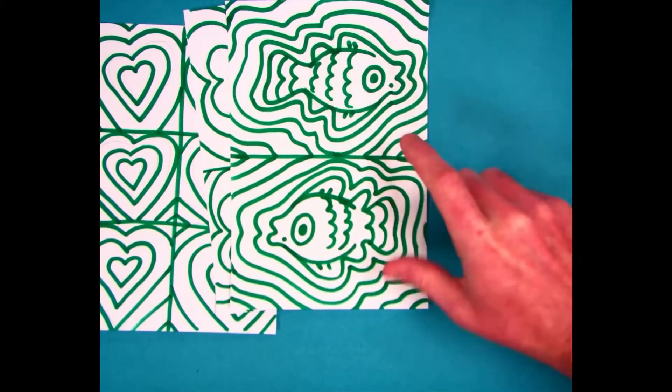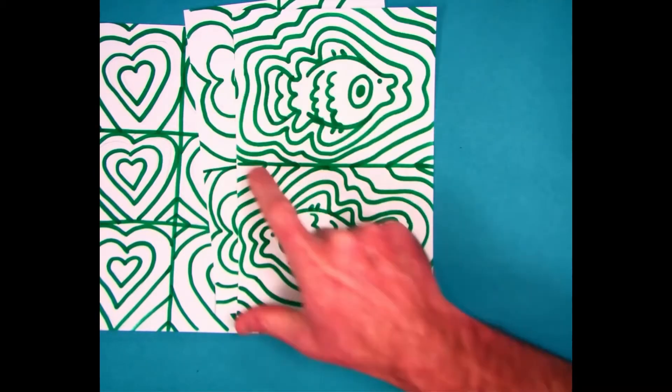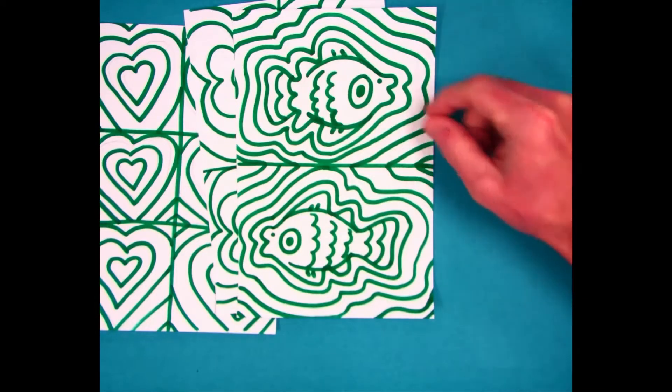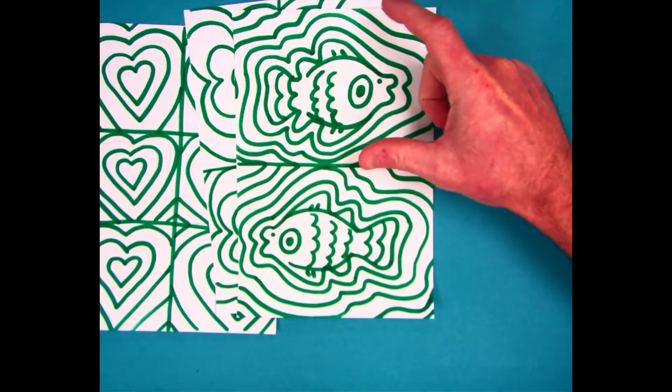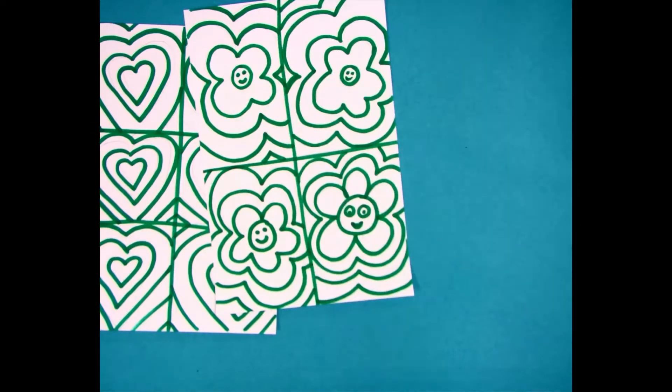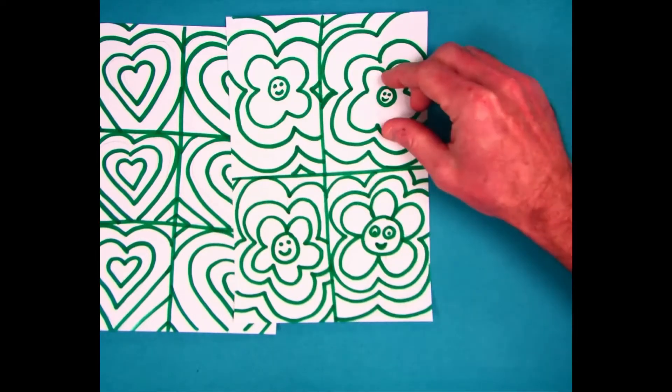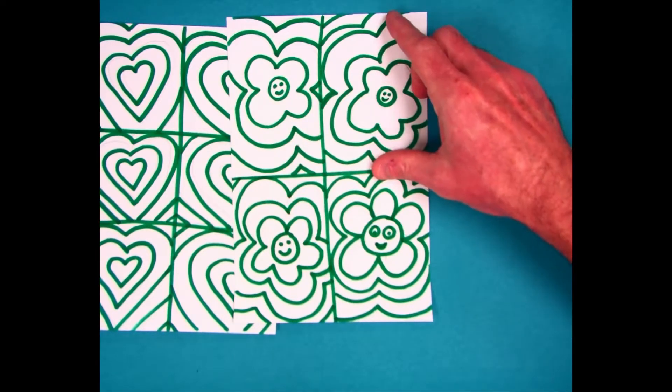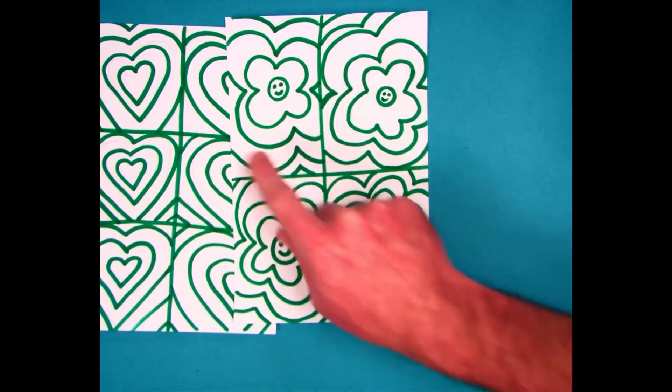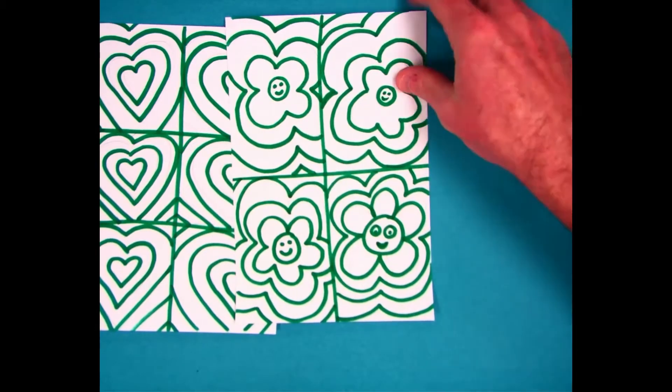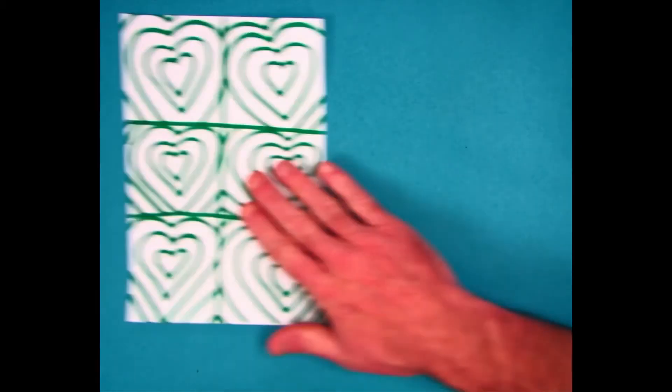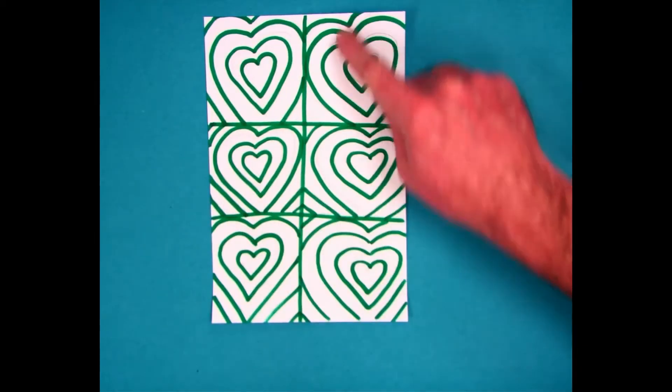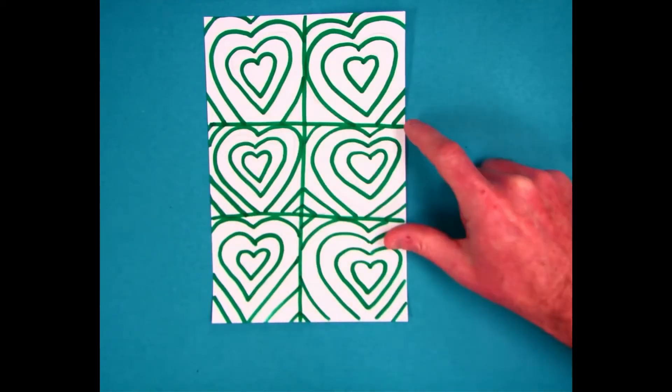You can see on this I divided my paper into two different sections and then I drew something and then rippled lines out from it. On this one I did flowers and rippled the lines out. Instead of dividing it into two, I divided it into four. And with this one here I did hearts and divided my paper into six.